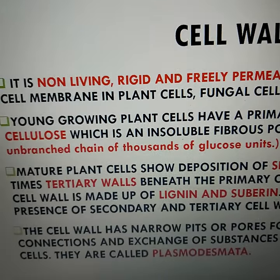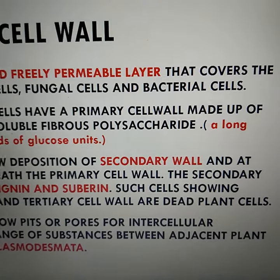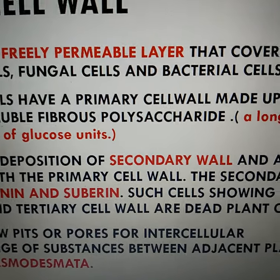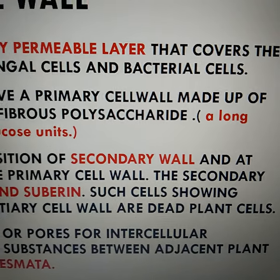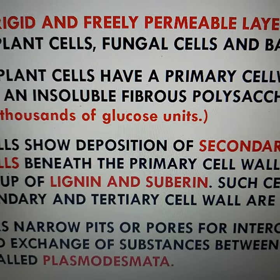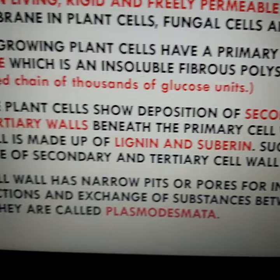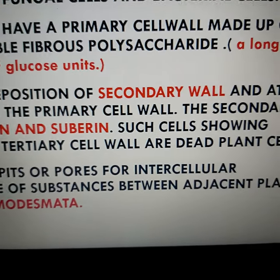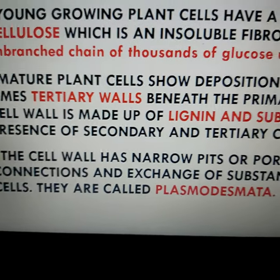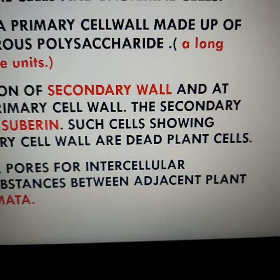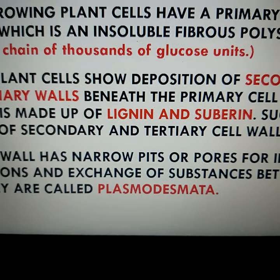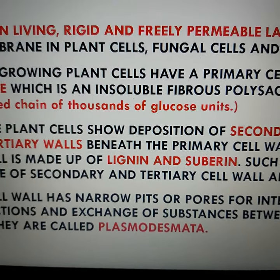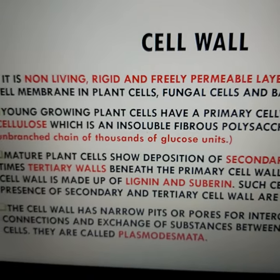When plant cells grow older, mature plant cells show deposition of a secondary wall as well as a tertiary wall beneath the primary cell wall. These secondary and tertiary cell walls are made up of lignin and suberin. The cell wall has narrow pits, holes or pores for intercellular connections and exchange of substances between adjacent plant cells. These pores which maintain connections are called plasmodesmata. These are the features of the cell wall.